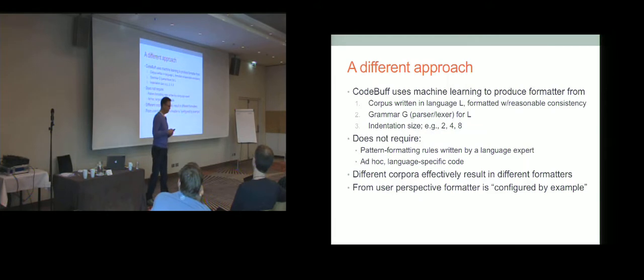It's a mess. So what we've discovered is that it's actually easier to solve the overall problem than it is to build a specific formatter. Our approach is to use machine learning to build a formatter. And the general strategy is this: You give me a corpus, reasonably consistently formatted corpus. You give me a grammar for that language. And you have to tell me the indentation size so I can capture indentation versus alignment. You don't have to give me any ad hoc code, no pattern to formatting rules. And I will use a statistical model to build a code formatter. You program this by example. If you give me a different corpus with different style, you have effectively created a different formatter.